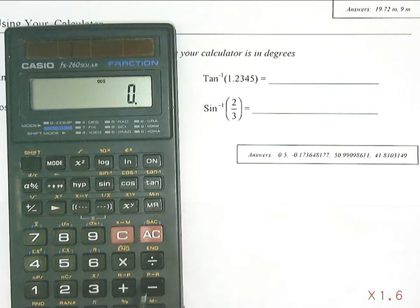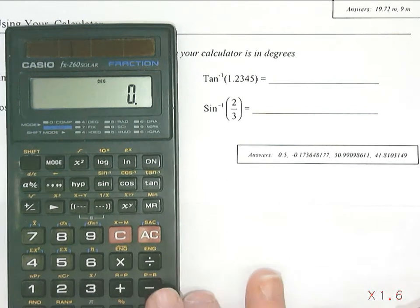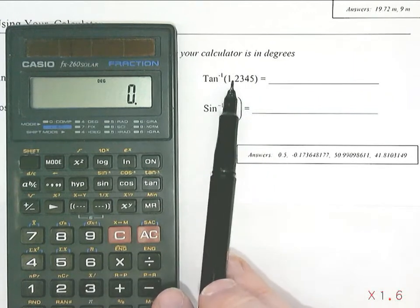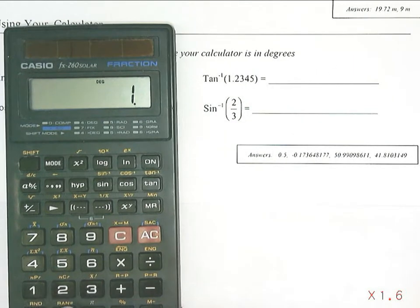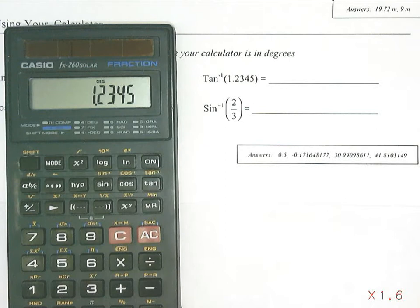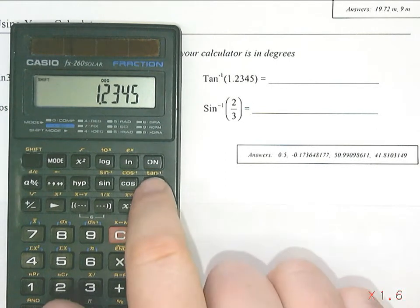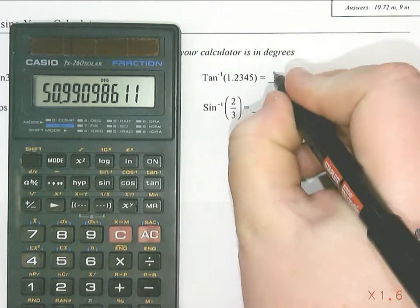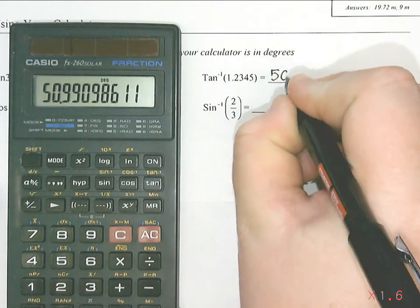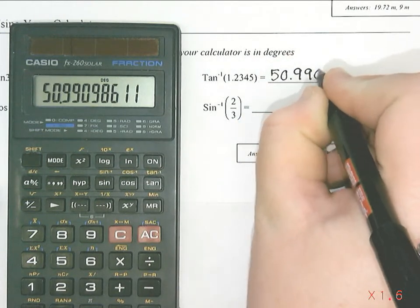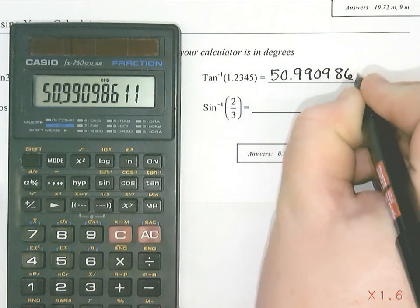So on this calculator, where I do not see what I type in on the screen, I'm going to put in 1.2345, and then instead of just pressing tan, I press shift and then tan, and I end up with 50.99098611.